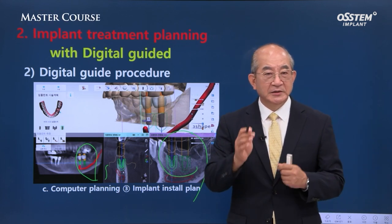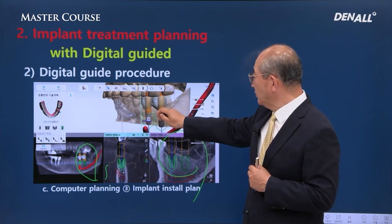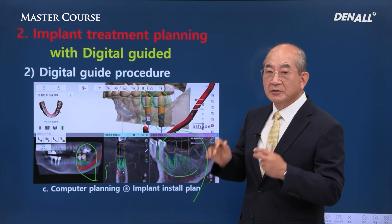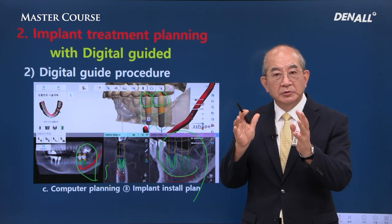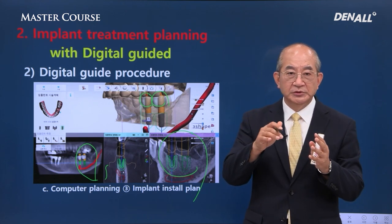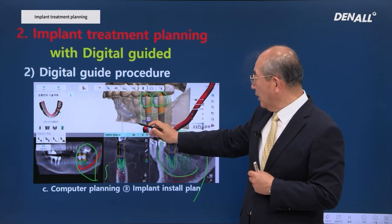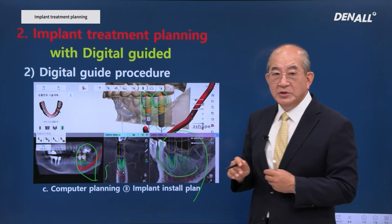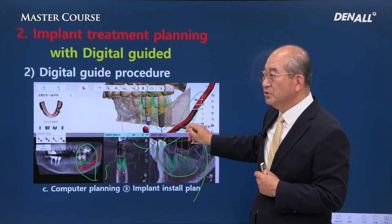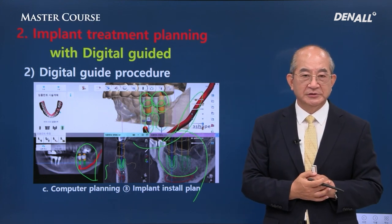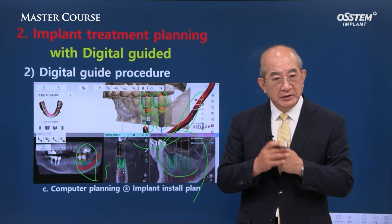Top-down method: we first determine the crown. We do an oral scan, gather surface data, and provide a custom solution for the patient on the computer. Following that, abutment position and angle is determined. Third is implant placement, avoiding important anatomical structures such as the inferior alveolar nerve. This is the basic concept of the top-down method, and this is digitally-driven treatment.